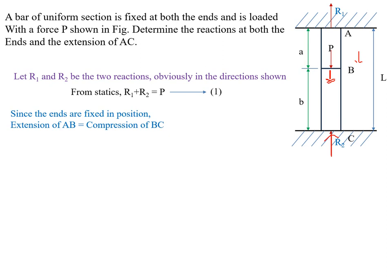Now consider the AB bar and apply the principle of superposition. For the AB member, taking the left-hand side, the only force acting is R1 in the upward direction. The net force in AB is R1. The nature of this force is tensile, so extension will occur in the AB member.